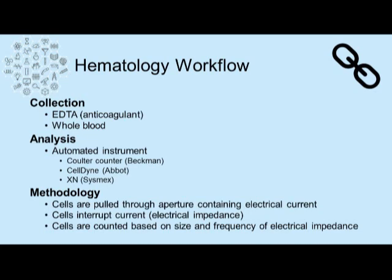That whole blood anticoagulant sample is then taken to the hematology department, where it's often tested on an automated instrument. A few examples of automated instruments include the Coulter counter by Beckman, Celldyne made by Abbott, and the Sysmex analyzer manufactured by Sysmex. Each of these instruments use the same methodology, which works by pulling the cells through an aperture containing an electrical current. As the cells pass that electrical current, the electrical signal is interrupted — this is known as electrical impedance. Based on the interruption of that electrical current, the size of the cell is determined, and the frequency of interruptions determines the number of cells passing through the aperture. That's how the automated analyzer works to count those cells.